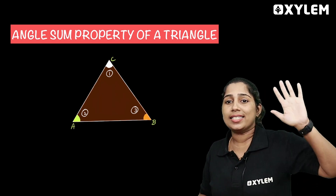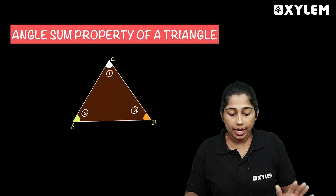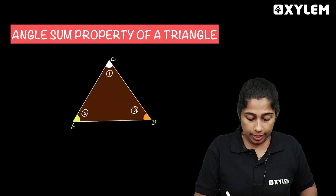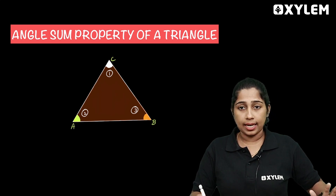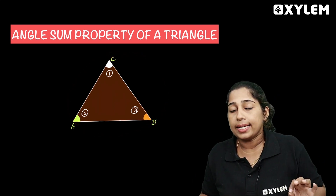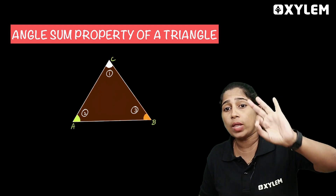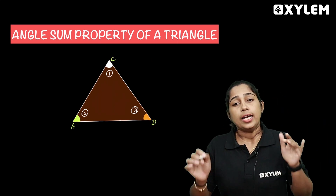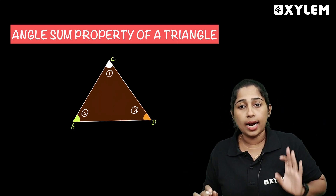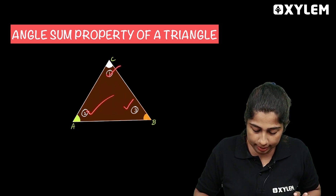We will say angle sum property. You will find a triangle here — Triangle ABC. This is our Triangle ABC. This ABC has 3 angles and 3 vertices. This triangle has 3 angles: Angle 1, Angle 2, Angle 3.